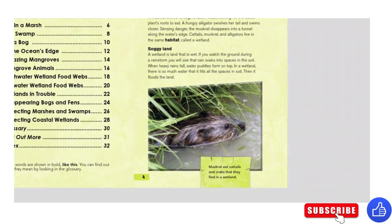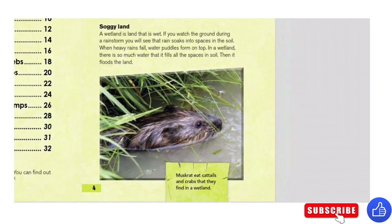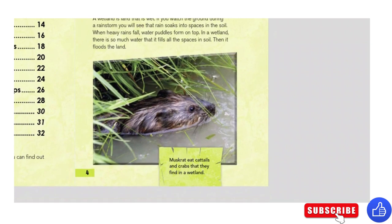A wetland is a land that is wet. If you watch the ground during a rainstorm, you will see that rain soaks into spaces in the soil. When heavy rain falls, water puddles form on top. In a wetland, there is so much water that it fills all the spaces in soil, then it floods the land. Muskrats eat cattails and crabs that they find in wetlands.